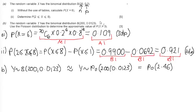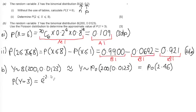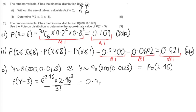For the Poisson we need to know the average. The mean of a binomial is calculated by doing NP, so 200 times 0.0123, giving a mean of 2.46. So Y is Poisson distributed with a mean of 2.46. Now it wants us to calculate the probability that Y is equal to 3. The value 2.46 isn't in the tables, so we use the formula: e to the power of minus 2.46, multiplied by 2.46 to the power of 3, all over 3 factorial. This gives an answer of 0.212 correct to 3 decimal places.